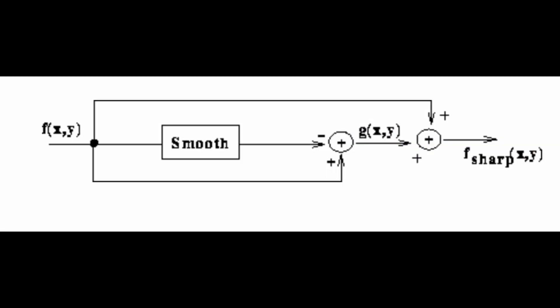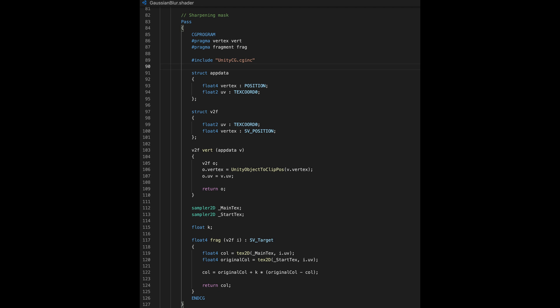As shown in the code, the effect is simply done by adding an extra pass to the blurring filter shaders.